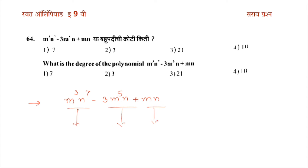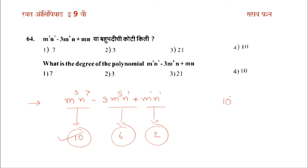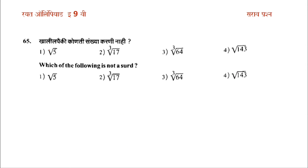In the first term the variables have indices 3 and 7. In the second term m and n are degree 8. In the third term m and n are degree 8, and the maximum number is degree 10. So the degree of this polynomial is 10.